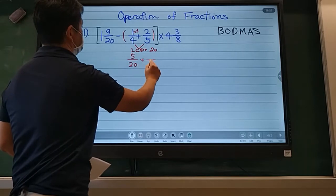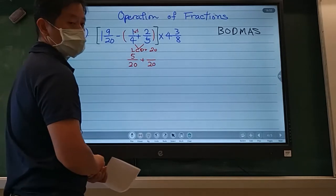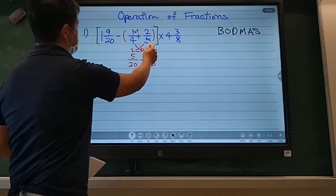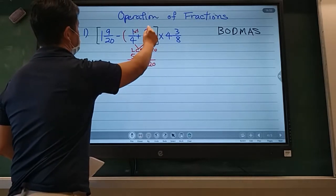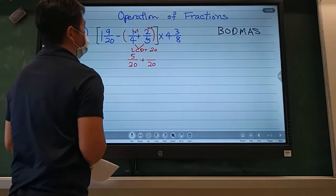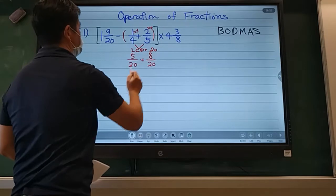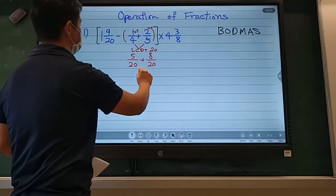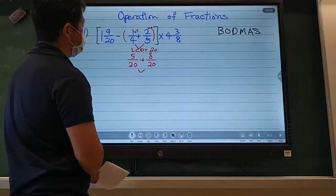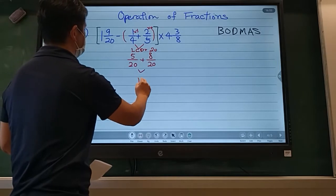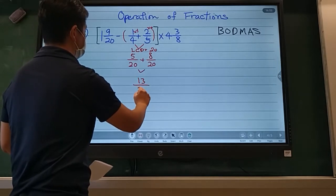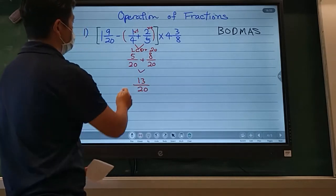Plus, that also has to be twenty. So five times what equals twenty? Times four. So two times four will be eight. In this case, we will have thirteen over twenty. And then we're done with this bracket.